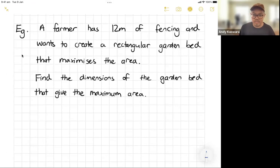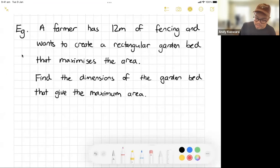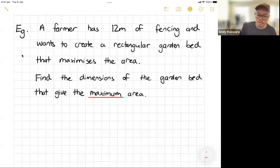A farmer has 12 meters of fencing and wants to create a rectangular garden bed that maximizes the area. Find the dimensions of the garden bed that give the maximum area. So a couple things here: whenever you see minimum or maximum that's kind of your hint that we're working with an optimization question.